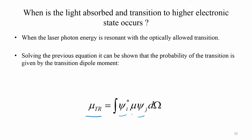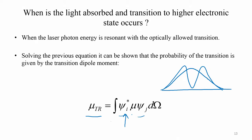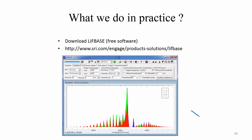Whether this light will be absorbed by this molecule is given by the transitional dipole moment, which is essentially this integral — the complex conjugate of the wave function, times the dipole moment, times the wave function, integrated over the entire volume of the molecule. This gives the probability of the transition. If the wave function of the lower state and the wave function of the higher state have sufficient overlap, this integral becomes large and the transition dipole moment is large. If the overlap is small, the transition dipole moment becomes small, meaning the transition is unlikely. Essentially, it governs whether the light will be absorbed by the OH molecule.